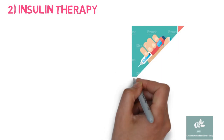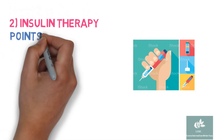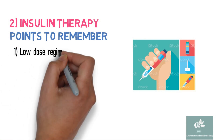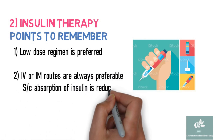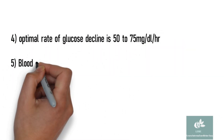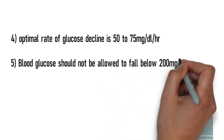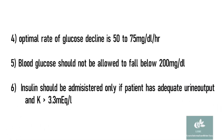Regarding insulin therapy, the main objective is to reduce the synthesis of ketone bodies. Low dose regimen is preferred because high dose regimen has the disadvantage of hypoglycemia. IV or IM routes are always preferred because subcutaneous absorption of insulin is reduced due to dehydration. Only short-acting insulin is used for infusion. The optimal rate of glucose decline is 50–75 mg per deciliter per hour. Glucose should never be allowed to fall below 200 mg per deciliter. Insulin infusion should be administered only if the patient has adequate urine output and potassium more than 3.3 mEq per liter.